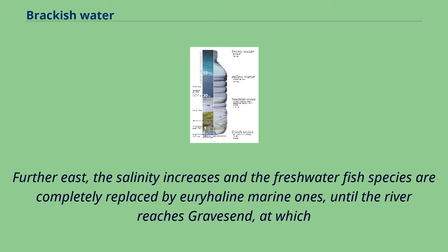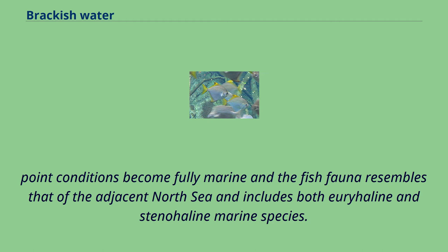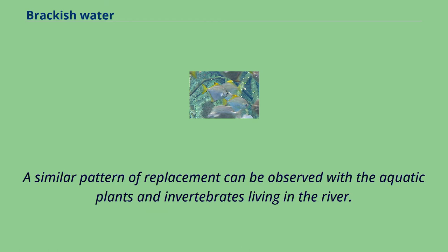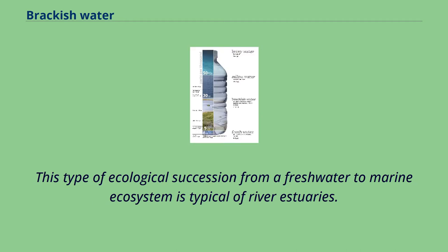Further east, the salinity increases and the freshwater fish species are completely replaced by euryhaline marine ones, until the river reaches Gravesend, at which point conditions become fully marine and the fish fauna resembles that of the adjacent North Sea and includes both euryhaline and stenohaline marine species. A similar pattern of replacement can be observed with the aquatic plants and invertebrates living in the river. This type of ecological succession from a freshwater to marine ecosystem is typical of river estuaries.